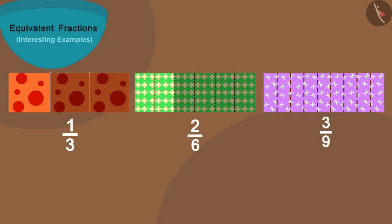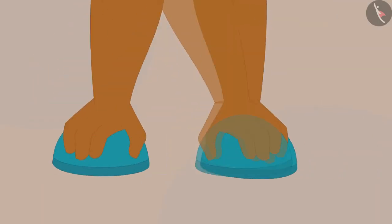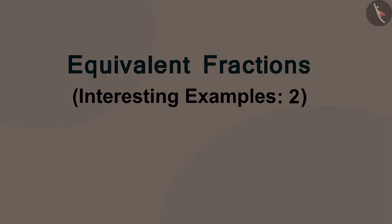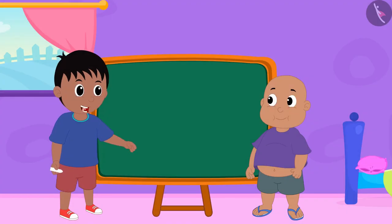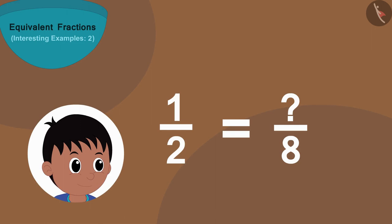Hello children. In the last video we saw some interesting examples of equivalent fractions. In this video we will learn more about it through some more interesting examples. Today Raju and Bablu are playing a unique game. Raju will write a fraction, then he will write the number below the equivalent of that fraction, and Bablu will have to find the number above it.